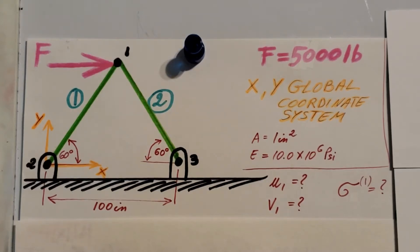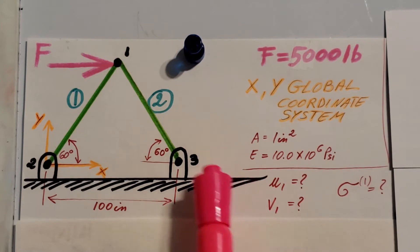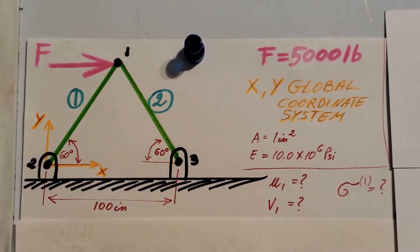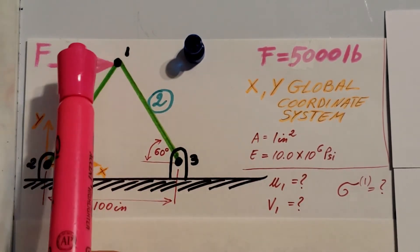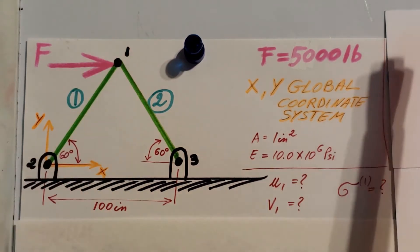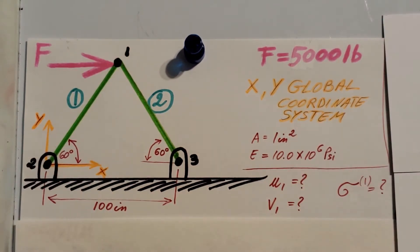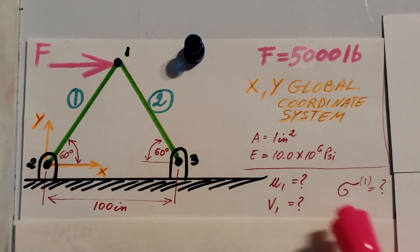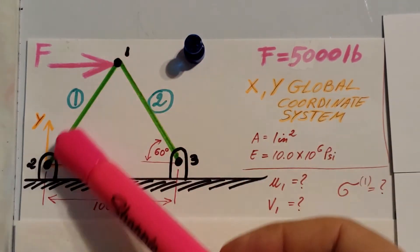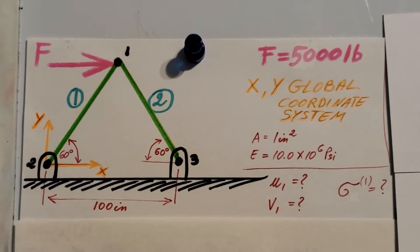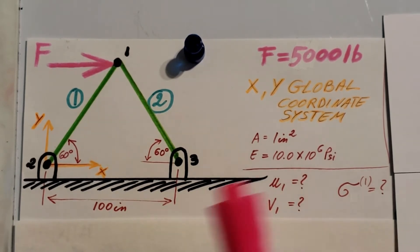This is a problem in finite elements and we are working with a truss structure. We have a force acting at node 1 of 5000 pounds. We want to find the displacement in the horizontal and vertical direction at node 1, and also find the stress in element 1.